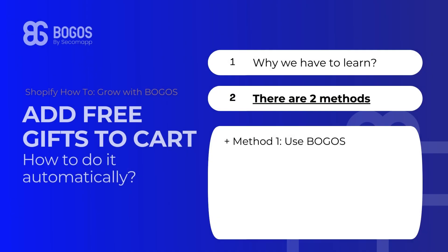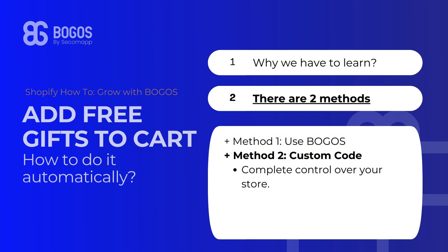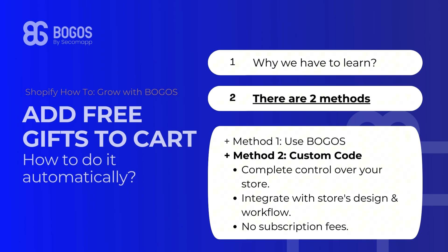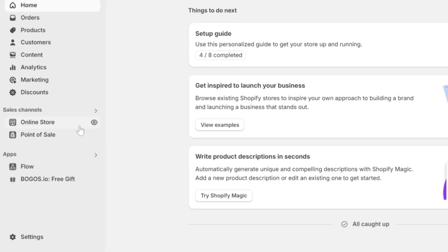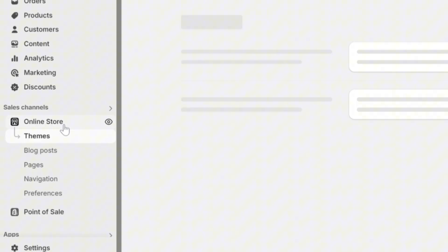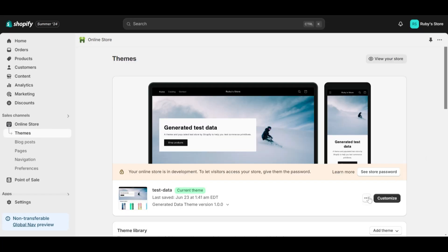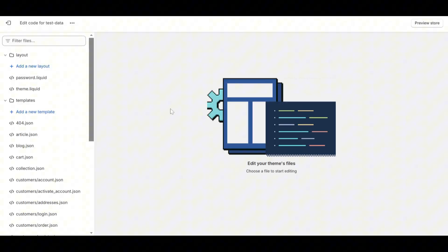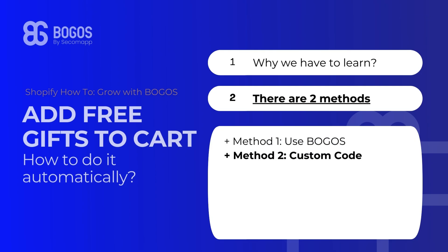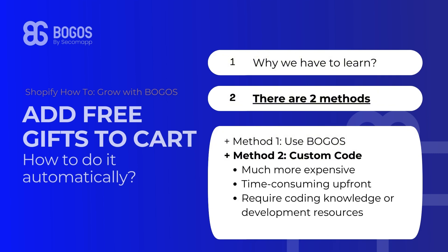Let's move on to Method 2 — custom code. It's perfect if you want complete control over your store, perfectly integrated with your store's design and workflow, with no subscription fee. To edit the code, go to Online Store, then Themes, and there you will find Edit Code. Customize your code there. However, keep in mind that custom code is much more expensive and time-consuming upfront, because it requires coding knowledge or developer resources.